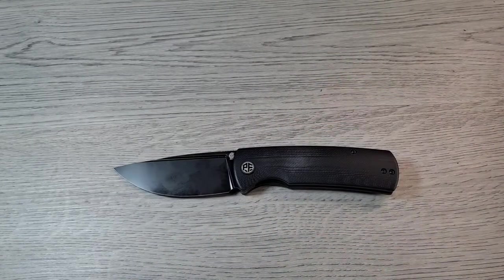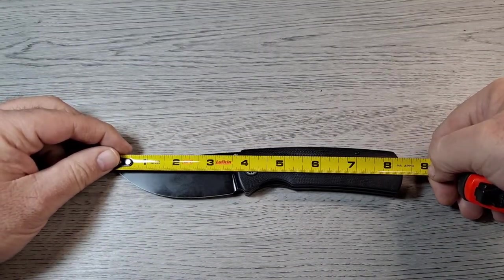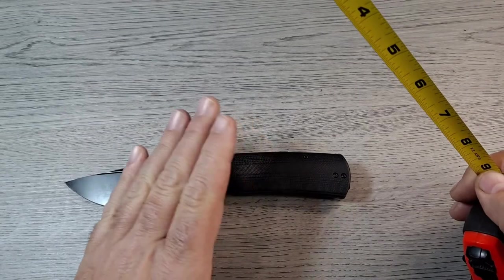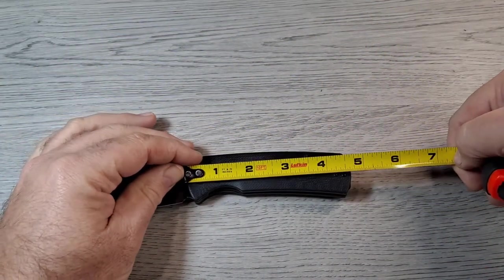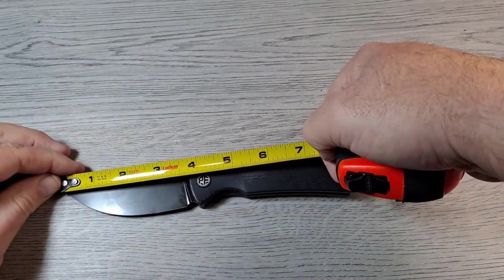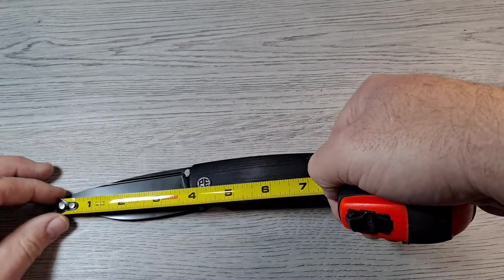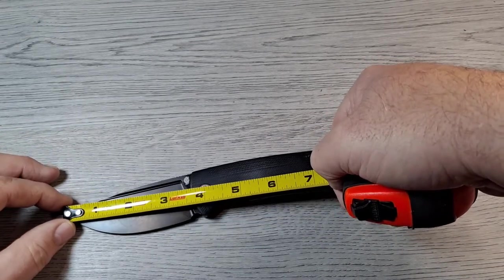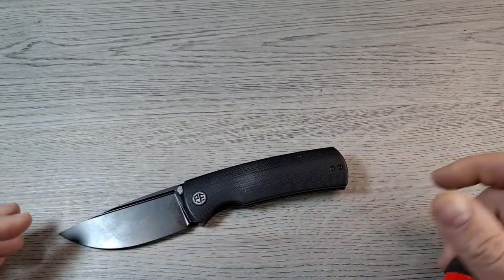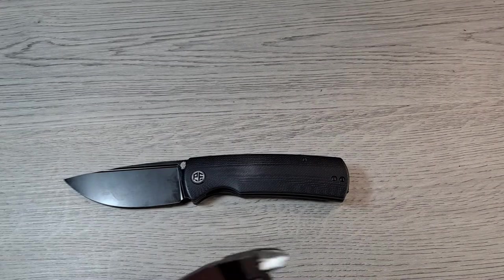Let me take some quick measurements. About 8 and a quarter inches overall length. Everything on the Petrified Fish website is all in millimeters and centimeters. You got about 4 5/8 handle, got about 3 5/8 blade, cutting edge about the same.